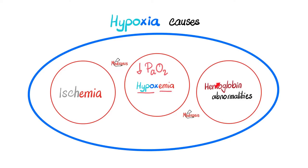What's the name of the vehicle — the car — that carries oxygen molecules in the blood? It's called hemoglobin. Hemoglobin abnormalities will make me unable to carry oxygen to the specific tissue, i.e., hypoxia.